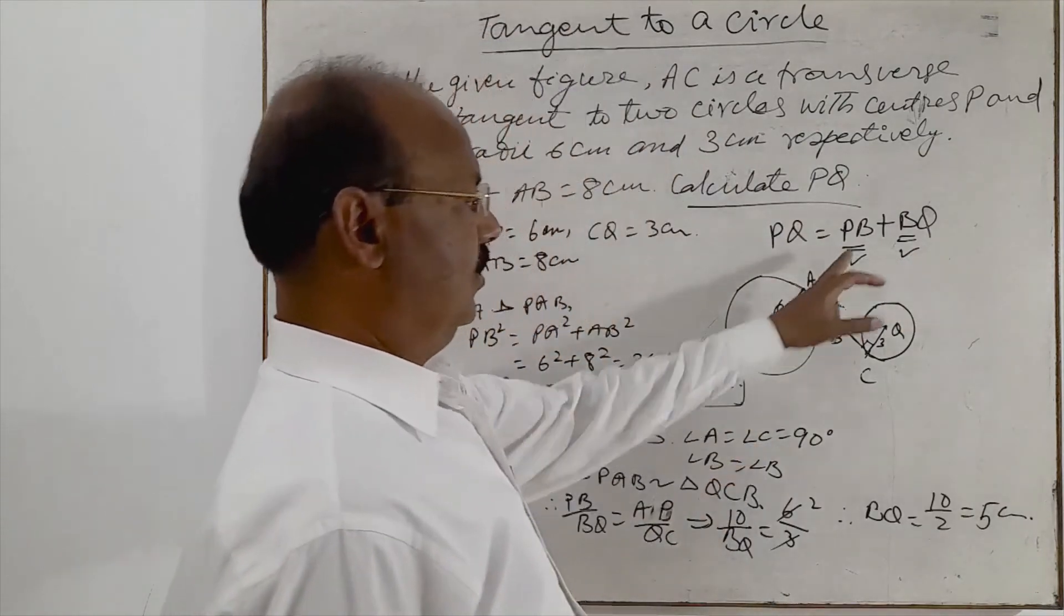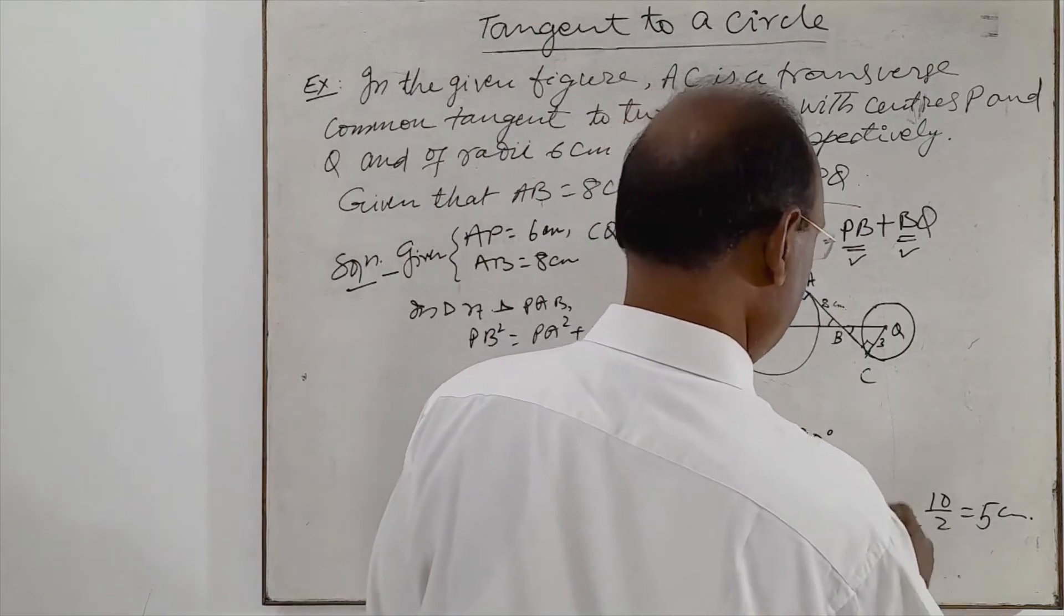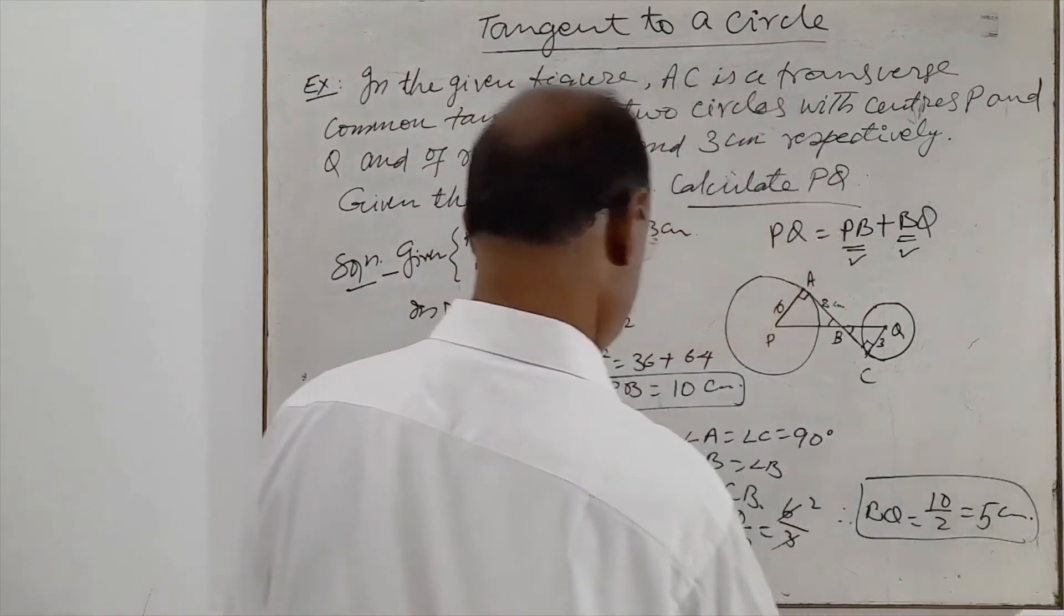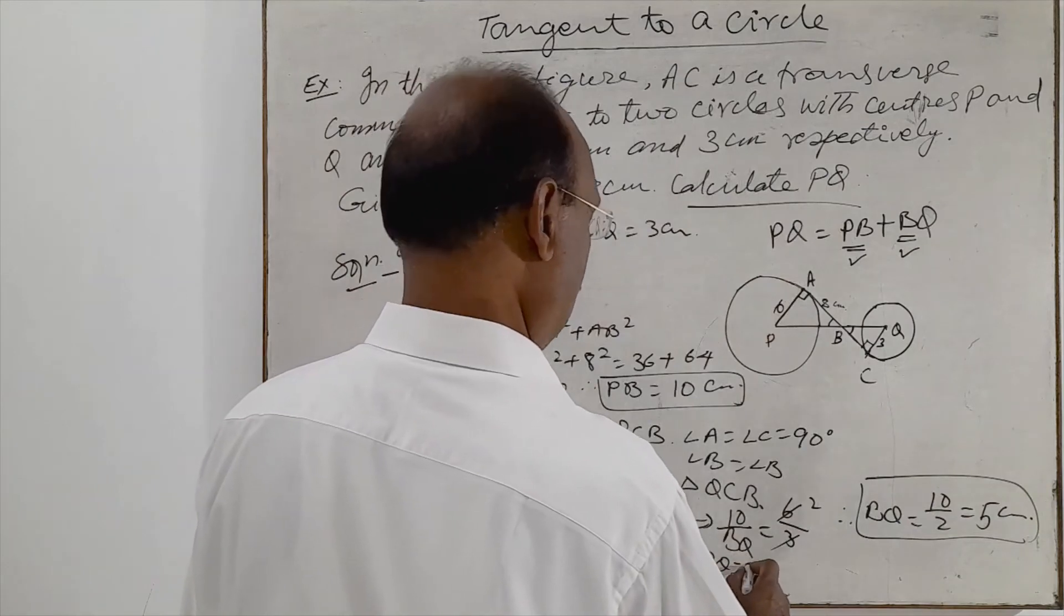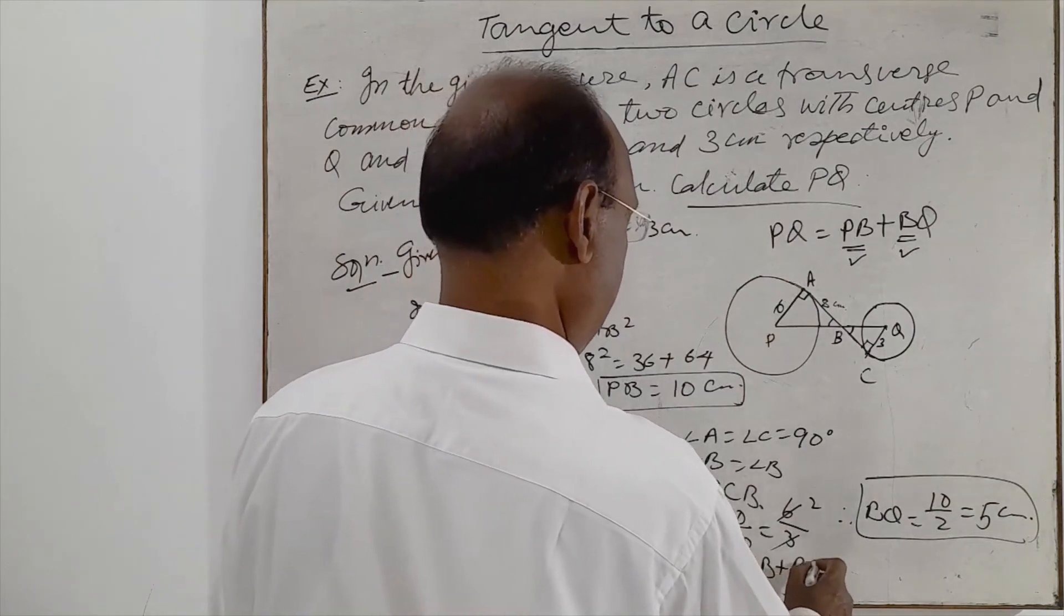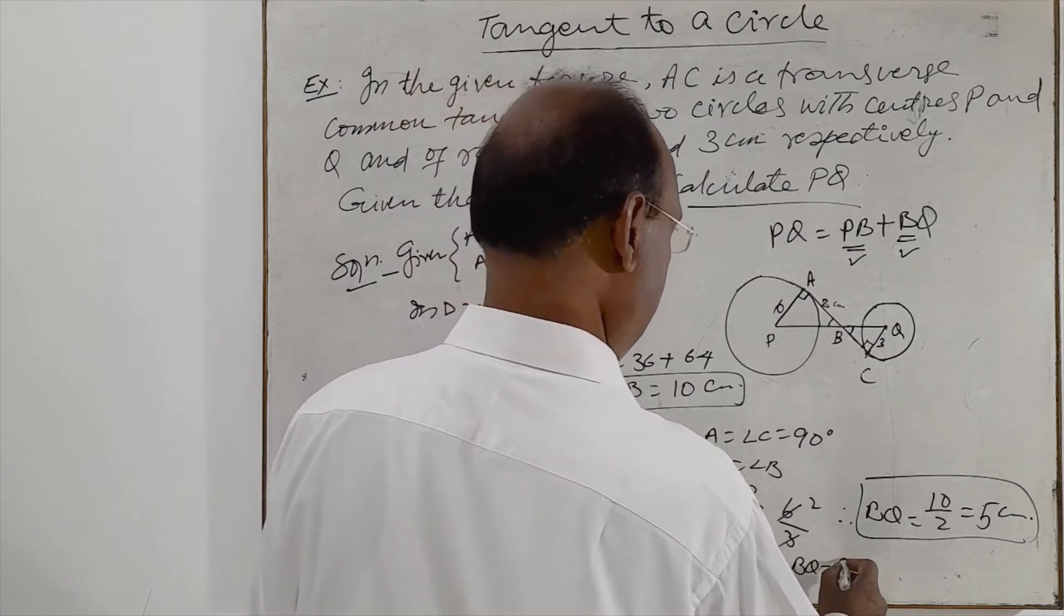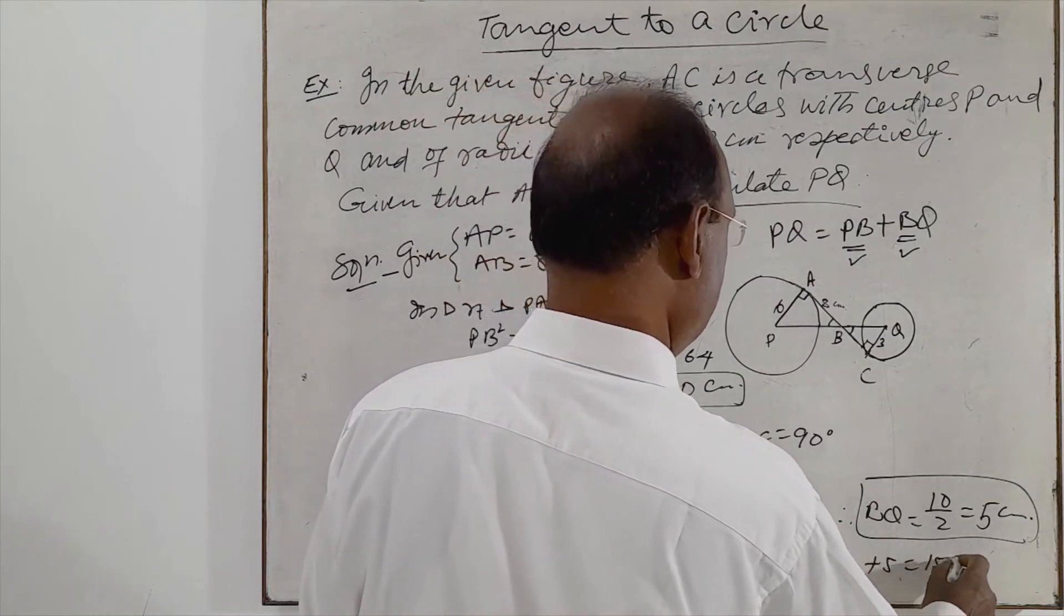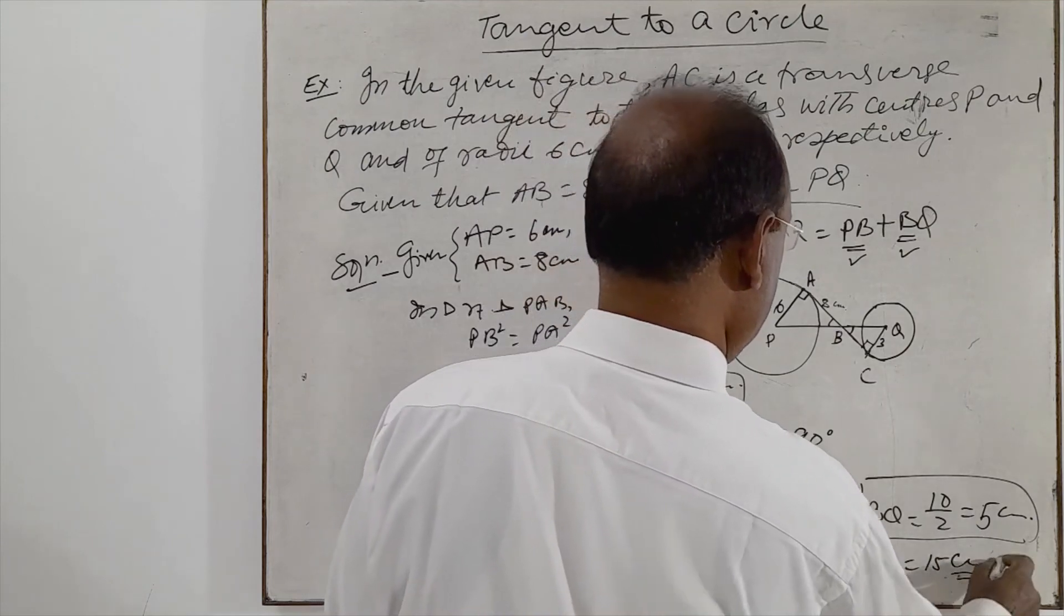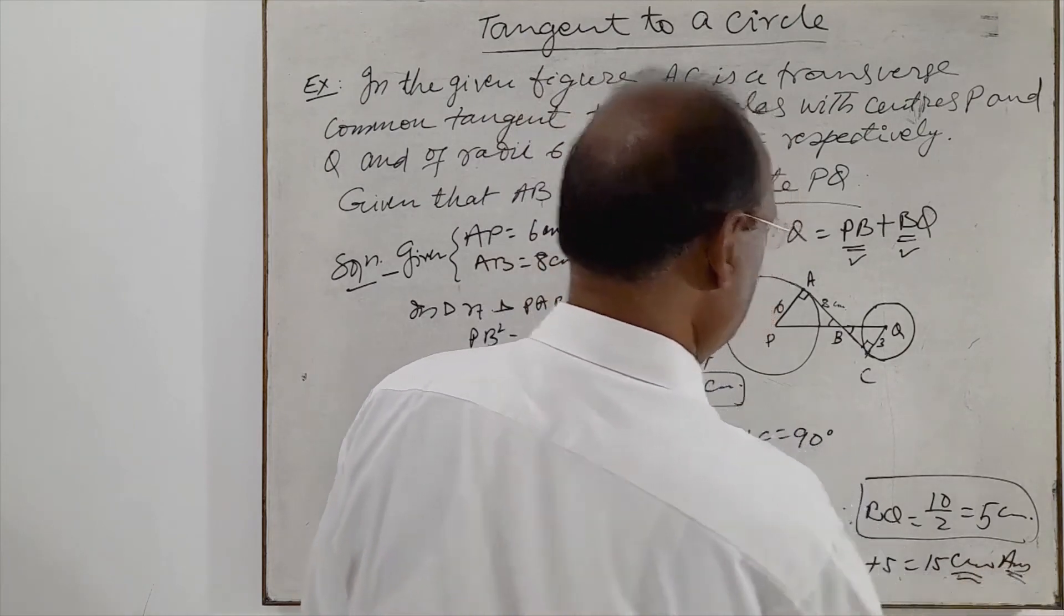And PB we have got 10 centimeter. So therefore, we can write, PQ is equal to PB plus BQ is equal to 10 centimeter plus 5 centimeter is equal to 15 centimeter. This is the answer.